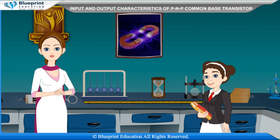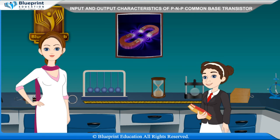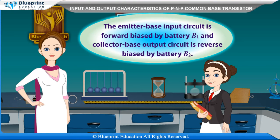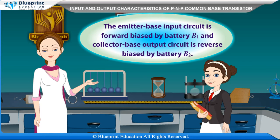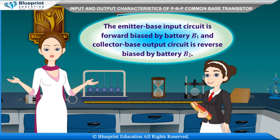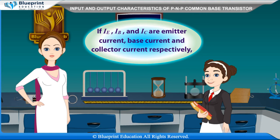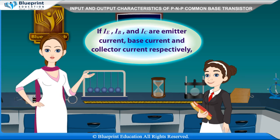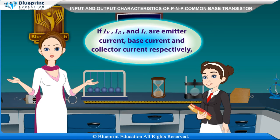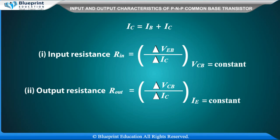In common base configuration, the base is common to both the input and output circuit. The emitter-base input circuit is forward biased by battery B1, and the collector-base output circuit is reverse biased by battery B2. If IE, IB, and IC are emitter current, base current, and collector current respectively, then IE is equal to IB plus IC.